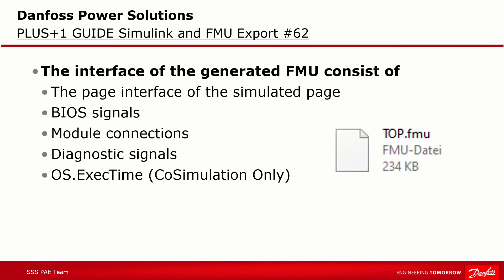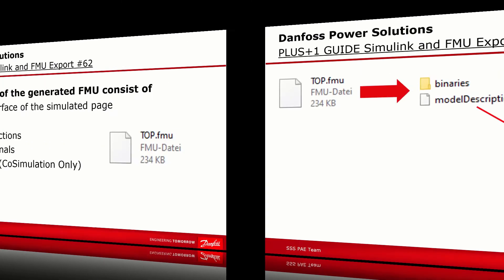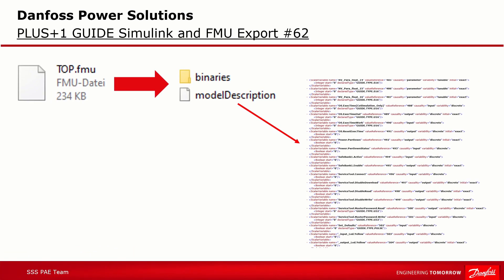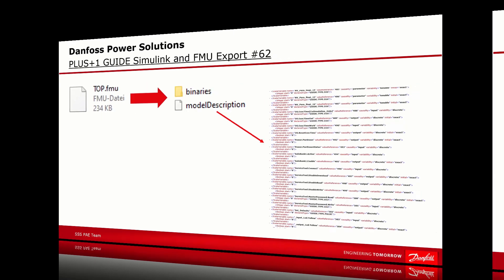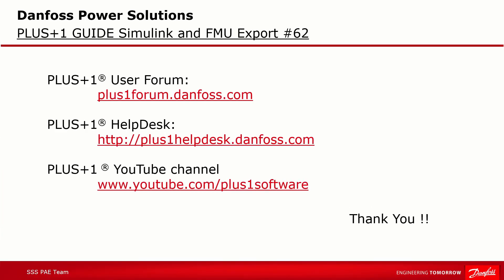Module connections and diagnostic signals are also included. The FMU is a ZIP file, so you can open it in ZIP format and see it includes a folder with DLLs and a file called model description, which shows all the interface signals generated from your Guide code. Please take a look at the Guide user menu and the help content as well, where this new feature is described in more detail. We hope you found this tutorial useful. Plus+1 Community help is available on the Plus+1 user forum — check out other videos on our YouTube channel or contact the Plus+1 help desk. Thank you for your attention.